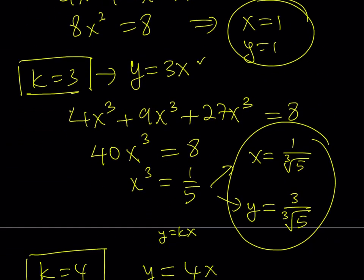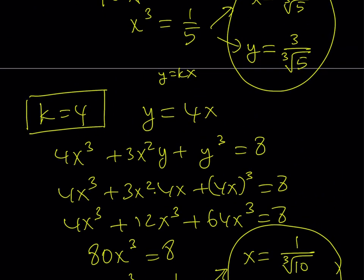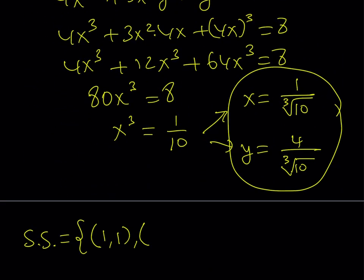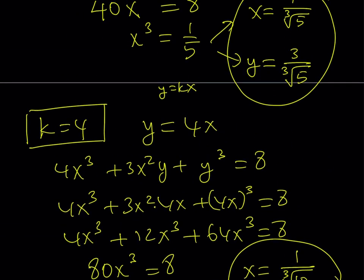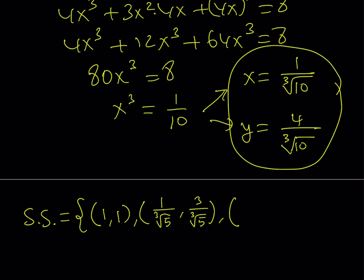So the solution set is going to look like the following. Our first pair was (1, 1), which was pretty basic. The second one comes from 1 over cube root of 5, and then the other one is y equals 3 times x, which is 3 times this. And the last value as an ordered pair is going to be 1 over cube root of 10, comma, 4 over cube root of 10. And those are going to be all the solutions.